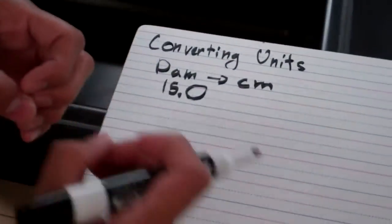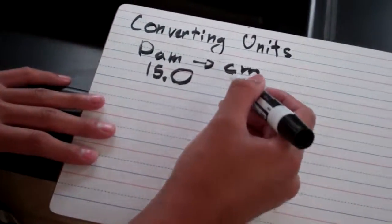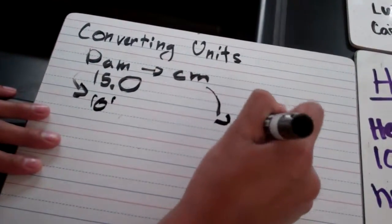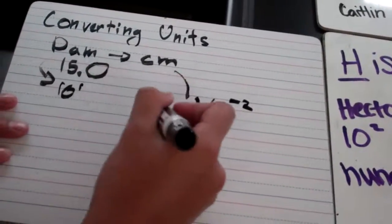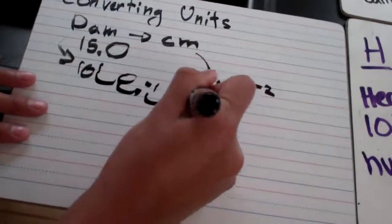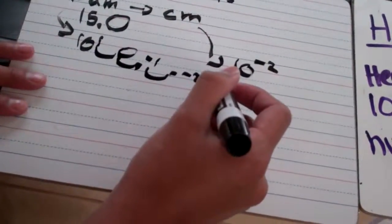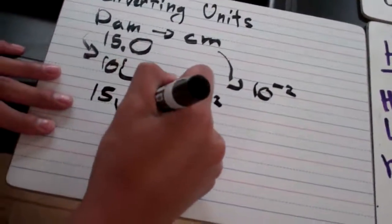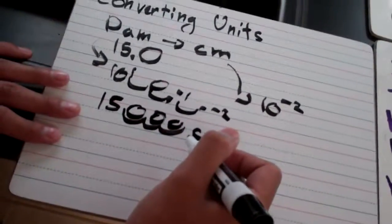Finally, we have converting units in the metric system. Our example is converting Decameters to centimeters. Decameters is 10 to the 1st, while centimeters is 10 to the negative 2nd. To convert, we count how many steps there are between them: from 1 to 0, to negative 1, to negative 2 — that's 3 places. We move 3 places to the left because we're going from bigger to smaller. So 5 Decameters becomes 15,000 centimeters. That's all.